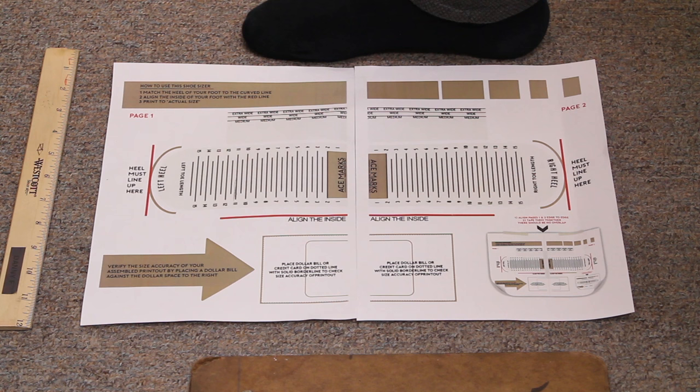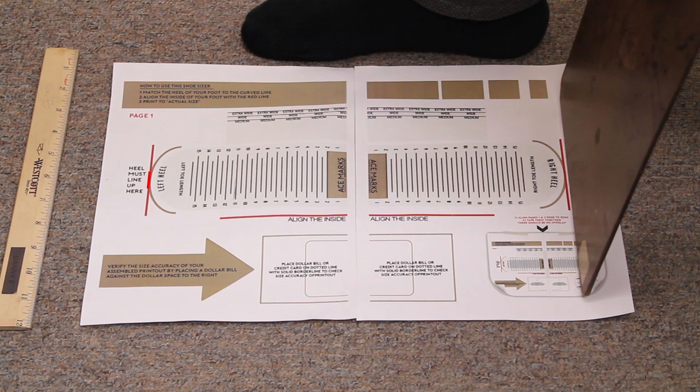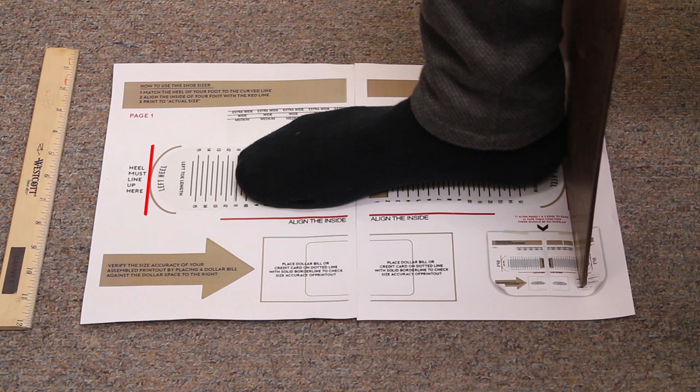Once you have the printable foot measure laid out on the floor, take something you can use to brace your heel along the red line. In this instance we're going to be using a clipboard. Now take your foot and press it as far back as you can along the clipboard.